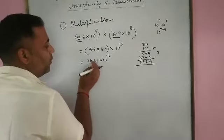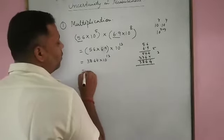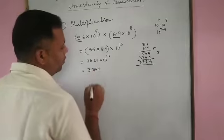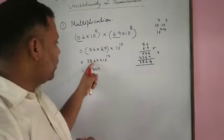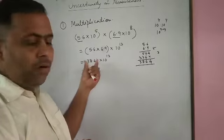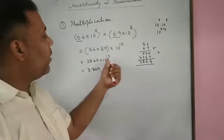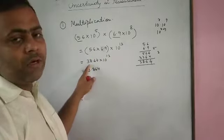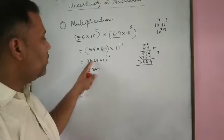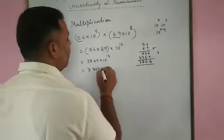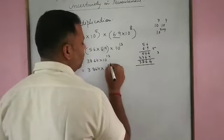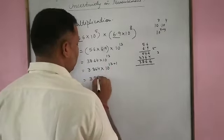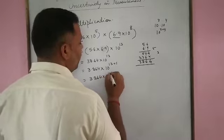But we have discussed that the value of the digit term must vary from 1.000 to 9.999. So we shift the decimal one place to the left side, giving 3.864. On moving the decimal to the left side, the value of the digit term decreases, so we must increase the exponent by 1. Therefore the result is 3.864 into 10 to the power 14.